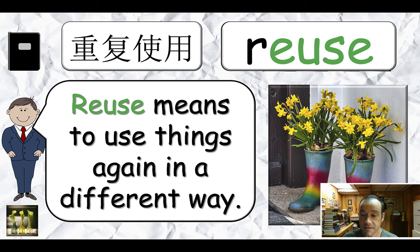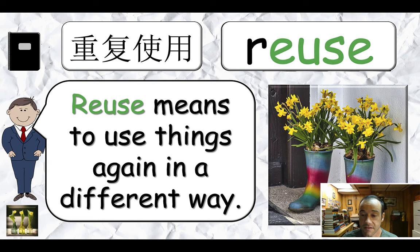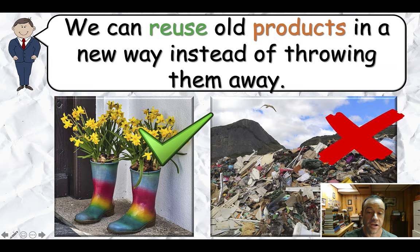Next one is reuse. You can have students raise their hand to read it and then show them this example. We can reuse old products in a new way instead of throwing them away. Here we're using it as a pot for a plant, and here it just ends up in the trash.